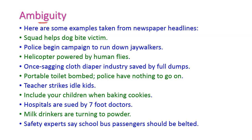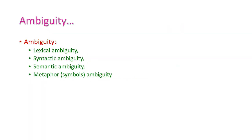Ambiguity means more than one meaning for the same sentence or word. Examples taken from news headlines show that meanings are understood only by native speakers, and somewhat difficult for people new to English. There are four types of ambiguity: lexical ambiguity — a single word gives more than one meaning; syntactic or semantic ambiguity — the same sentence gives more than one meaning; and metaphor — when a symbol or image gives more than one meaning.